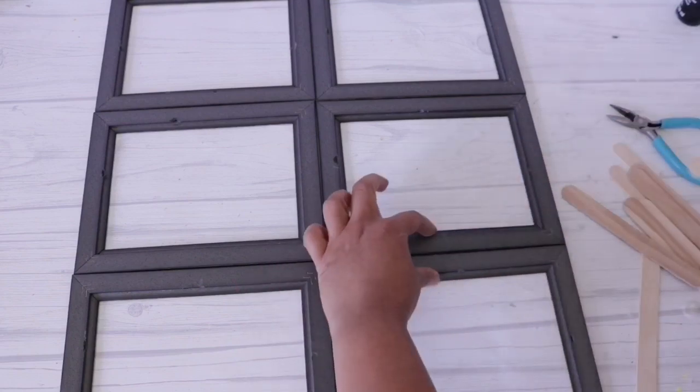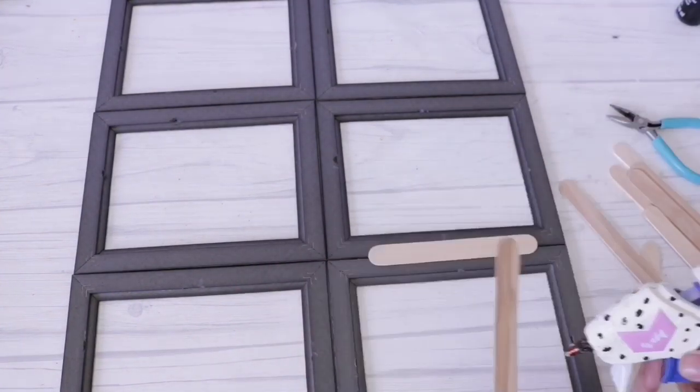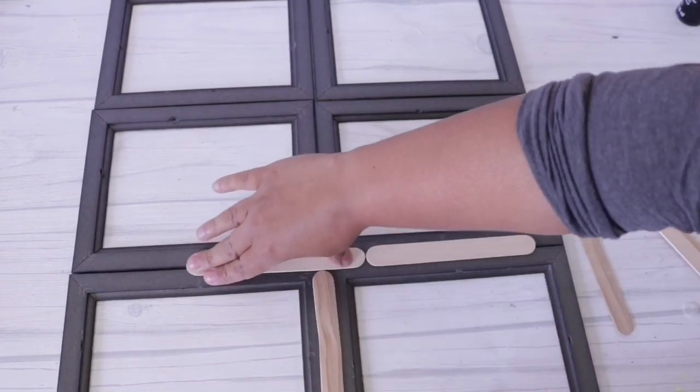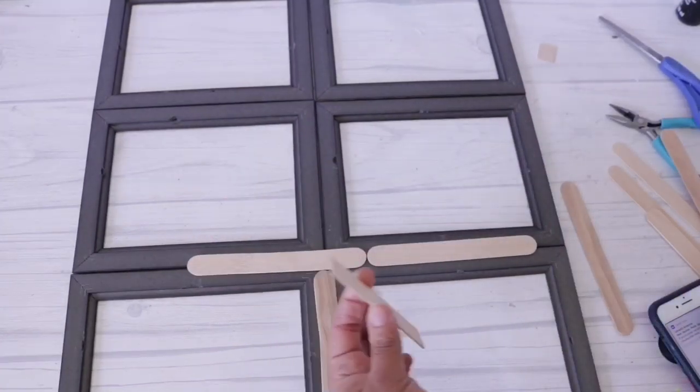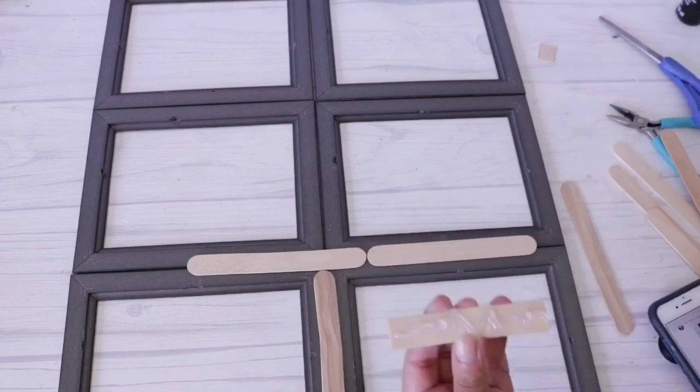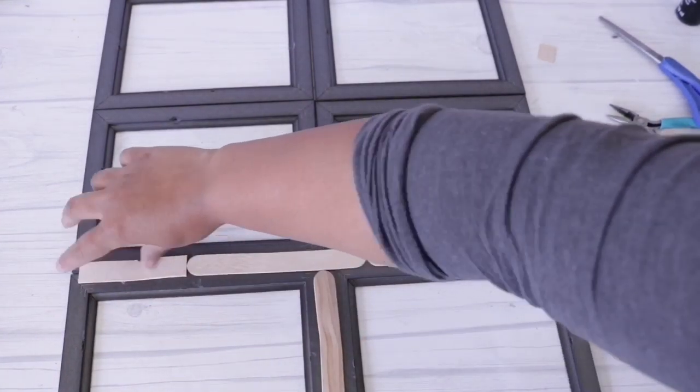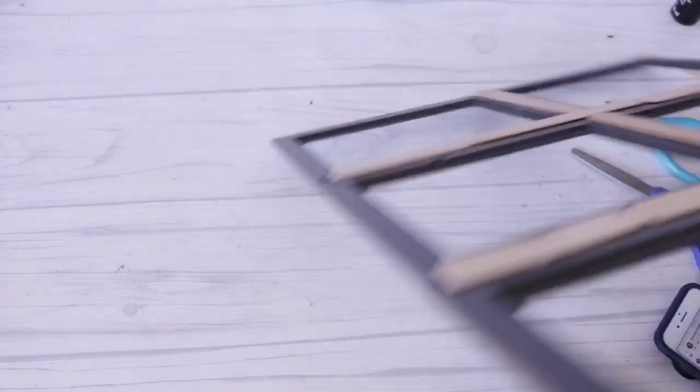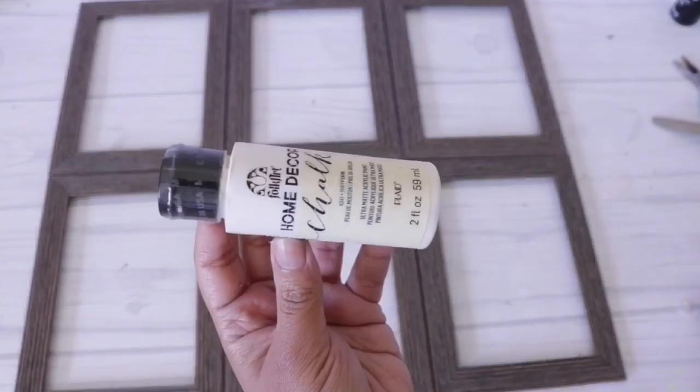If I would have added this popsicle stick just a little bit lower, I wouldn't have had to cut down the third one on that row, but you live and you learn. You can cut down all of them if you want so they're nice and straight. Nobody's gonna see the back.